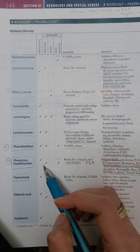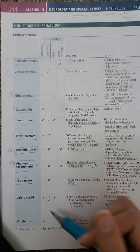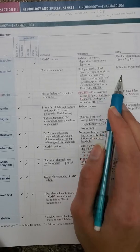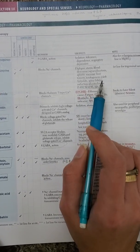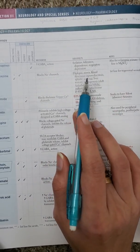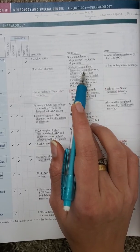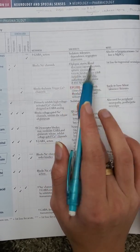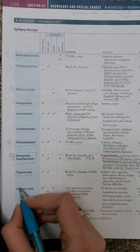Carbamazepine also causes megaloblastic anemia and aplastic anemia. It is a teratogenic category D drug, and taking it in pregnancy can cause cleft lip, cleft palate, and spina bifida.